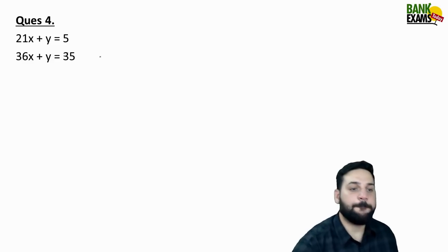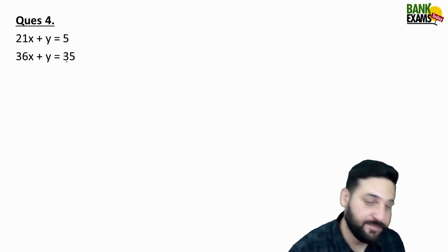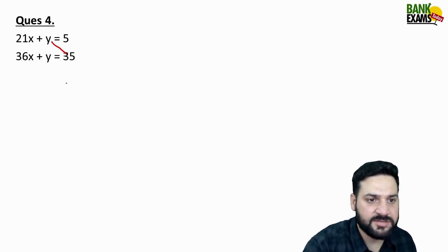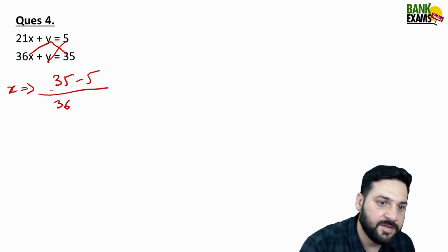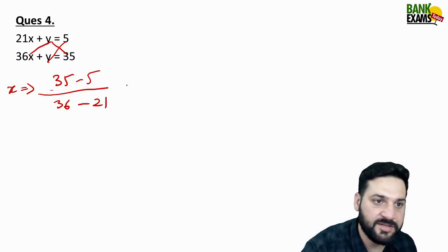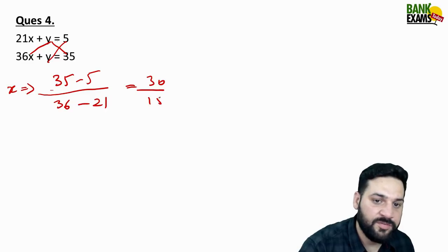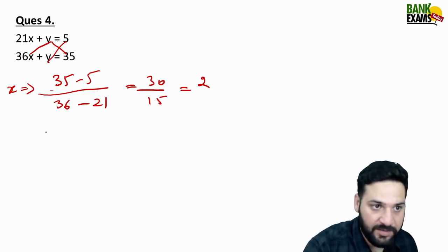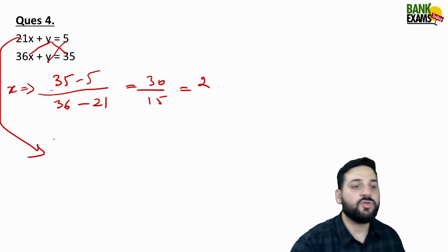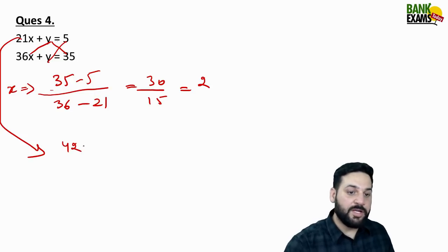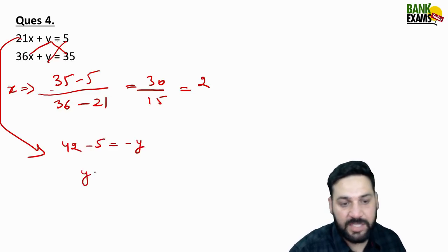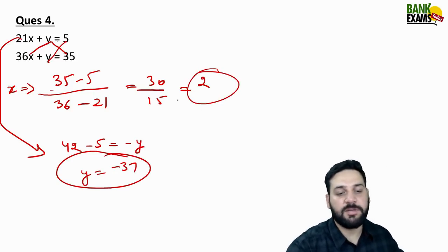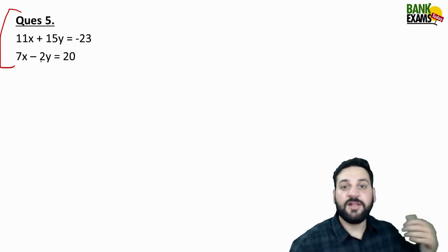Next question: 21x + y = 5 and 36x + y = 35. The numerator for x is 35 - 5 = 30, and the denominator is 36 - 21 = 15. So 30 divided by 15 gives x = 2. Substituting: 21 multiplied by 2 = 42, so 42 - 5 = 37 = -y, giving y = -37. So x = 2 and y = -37.